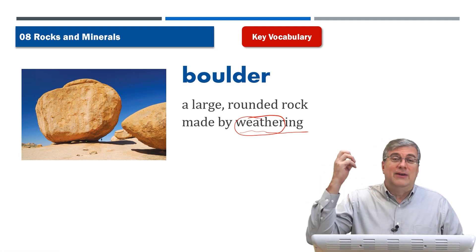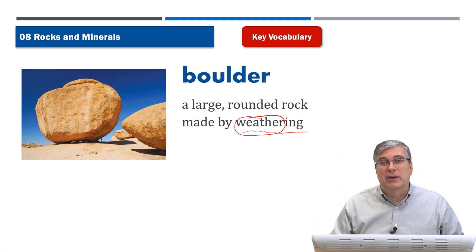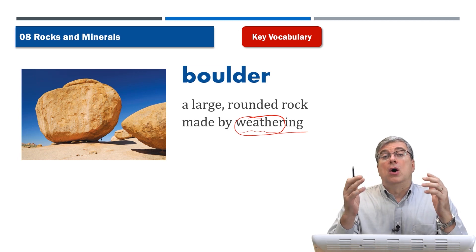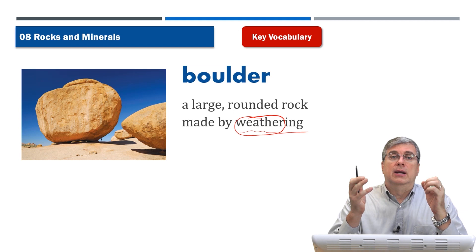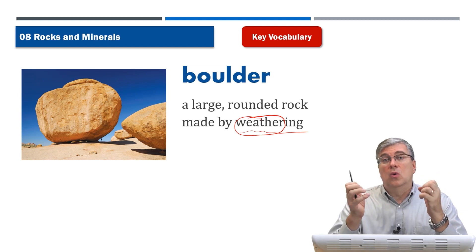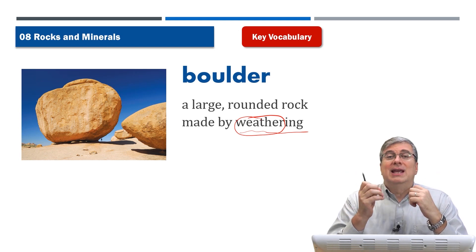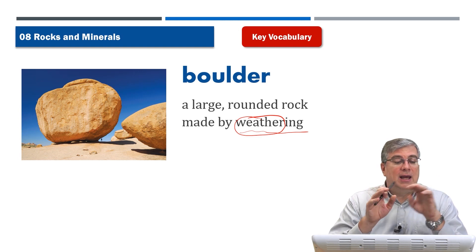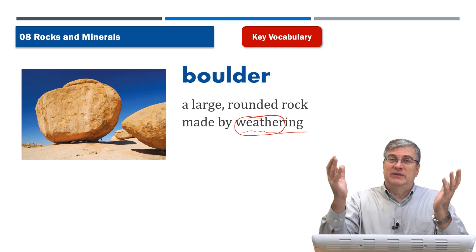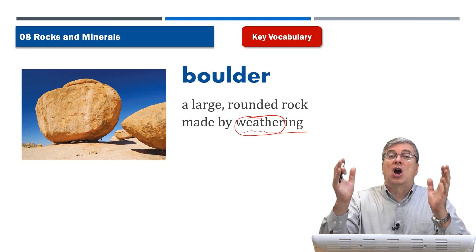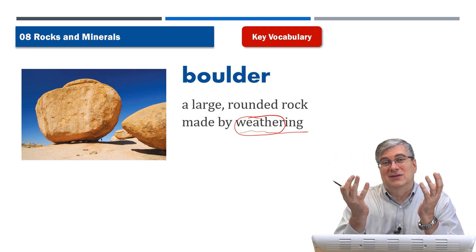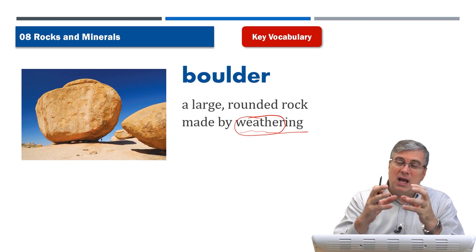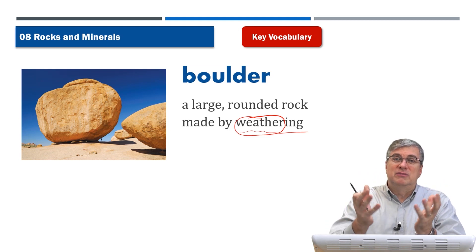We talked about this in an earlier unit. Over a long time, rain, wind, snow, freezing, and melting can have an effect on rocks. It can make new rocks and boulders — big pieces of rock carved by the wind and sometimes by the motion of landslides and things like that.